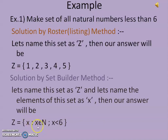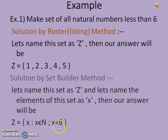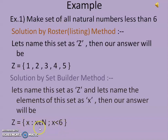Then, small x belongs to capital N — this is our first condition. Then comma, small x must be less than 6 — this is our second condition. Curly bracket close. These two conditions are very important; without them, our answer will not be complete.